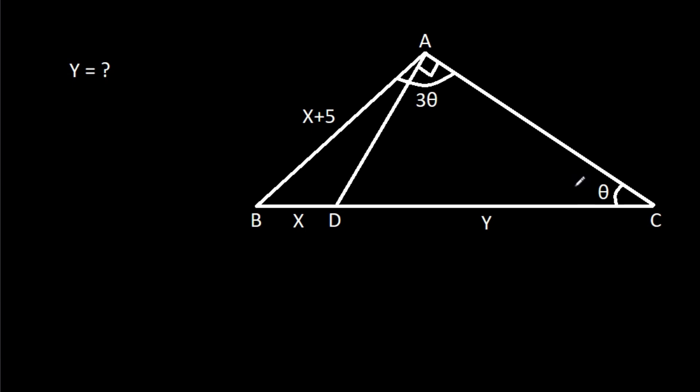In this video, we have been given that angle CAD is 90 degrees and angle CAB is 3θ and angle ACB is θ, and BD is x, AB is x plus 5, and CD is y. Then we have to find y.